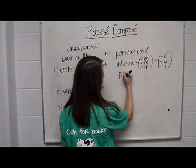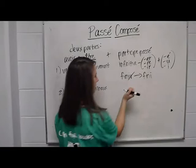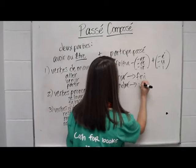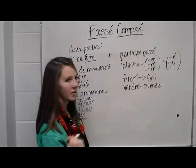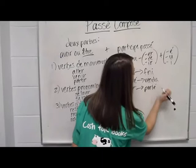For example, finir, which is a regular -ir verb, you take away the -ir, and it becomes fini. Vendre, which is a regular -re verb, you take away the -re, and it becomes vendu, with an accent on the u.